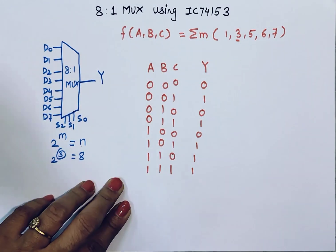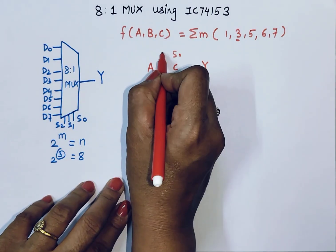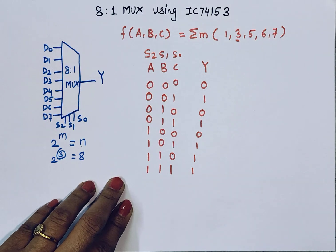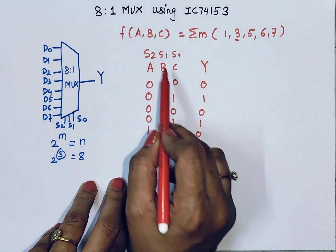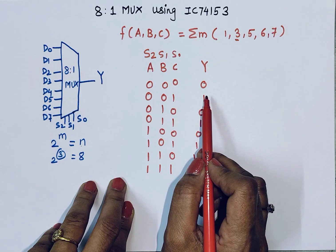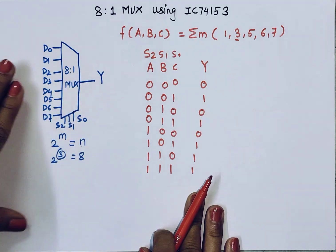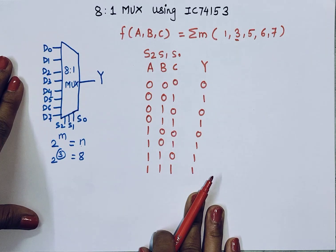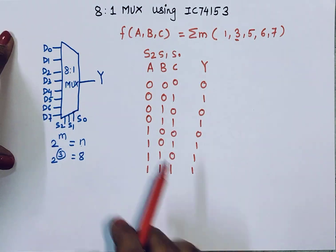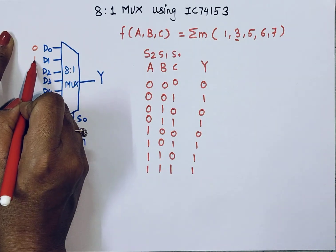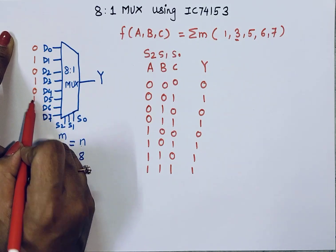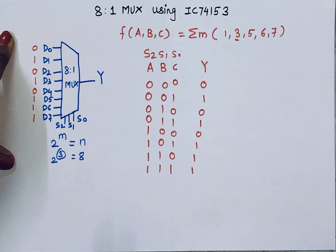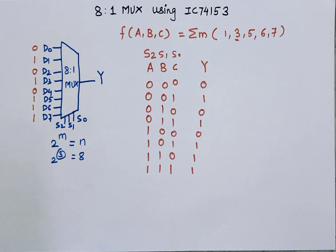These A, B, C values are nothing but our select inputs S0, S1, and S2. It means when select inputs are 0,0,0 the output is 0; when 0,0,1 the output is 1. For implementation, I'll connect D0 to 0, D1 to 1, D2 to 0, D3 to 1, D4 to 0, D5 to 1, D6 to 1, and D7 to 1.